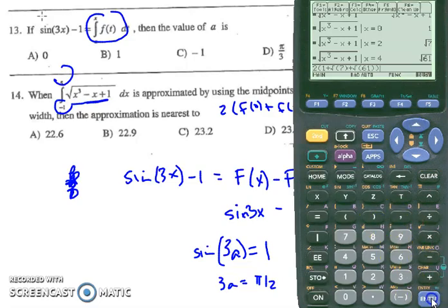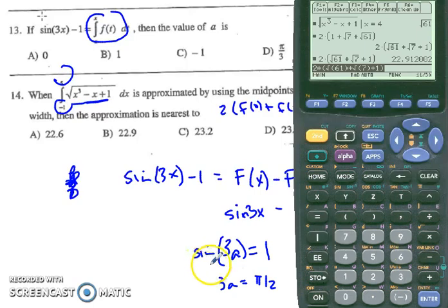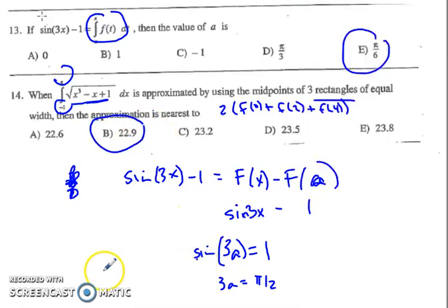Close paren, enter. Oh my goodness, what is that? Well, let's bring it into the line, hit green diamond, enter. We get 22.912, choice B.